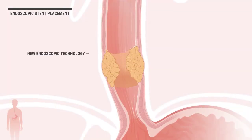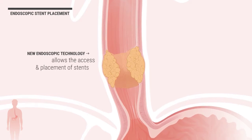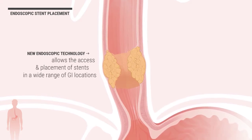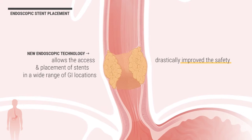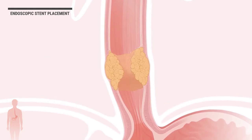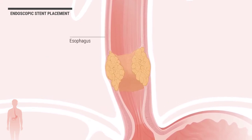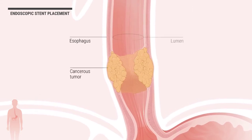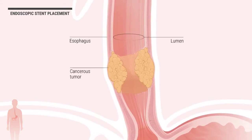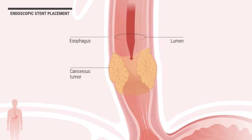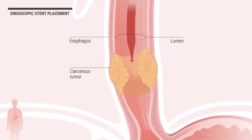New endoscopic technology allows the access and placement of stents in a wide variety of GI locations and has drastically improved the safety and effectiveness of the stents. In this example, the esophagus contains a cancerous tumor that has grown into the lumen, or space within the tube of the GI tract, obstructing the passage of food during digestion.